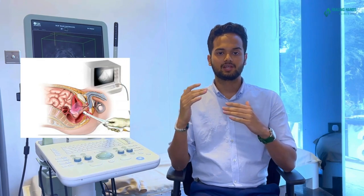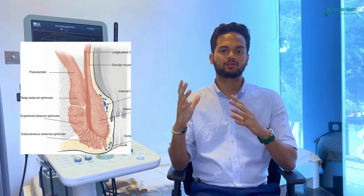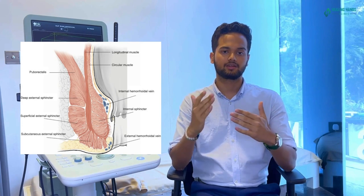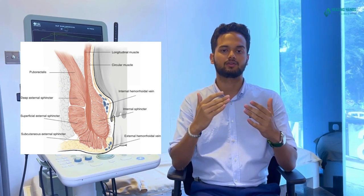Now, let's delve deeper into a specific type of ultrasound — the 3D endo-anal ultrasound. This specialized form of ultrasound imaging is used to generate detailed, three-dimensional images of the anal canal and the surrounding tissues. It's an invaluable tool for identifying conditions like anal fistulas, abscesses, sphincter injuries, and more.